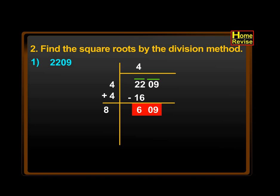Now to find the number to be written after 8, we have to divide the first two digits, that is 6 and 0 of 609. We know that 8 times 7 is 56, which is the nearest number to 60. Therefore, we can take 7 as the number to be written after 8.